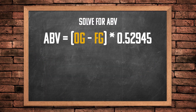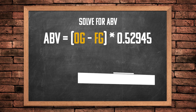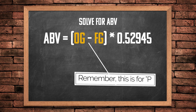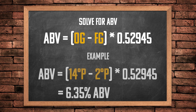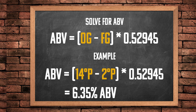To solve for ABV we are going to use the following equation: ABV equals OG minus FG in degrees Plato, multiplied by 0.52945. In our example, 14 degrees Plato minus 2, multiplied by that factor, gives us 6.3% ABV. This is not exact, but it is close enough for the purposes we are after.